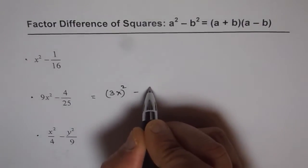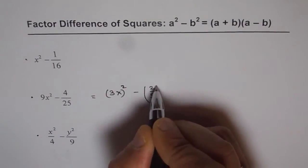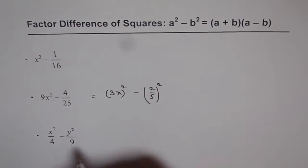Now 4 over 25 is 2 over 5 squared. Do you see that? So we have difference of squares now.